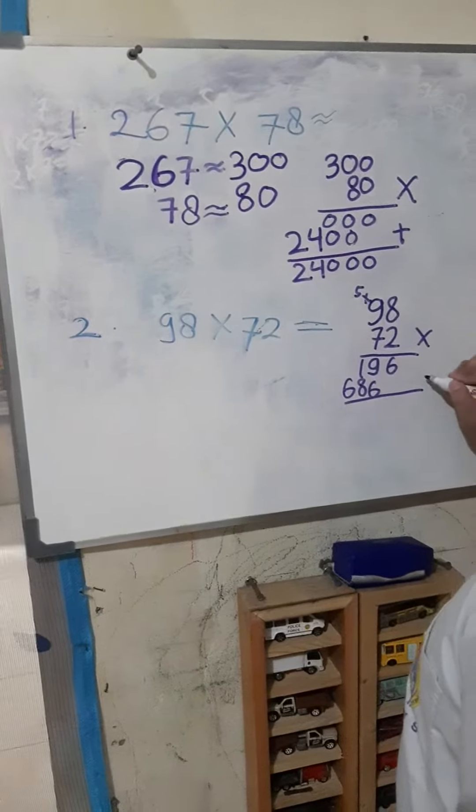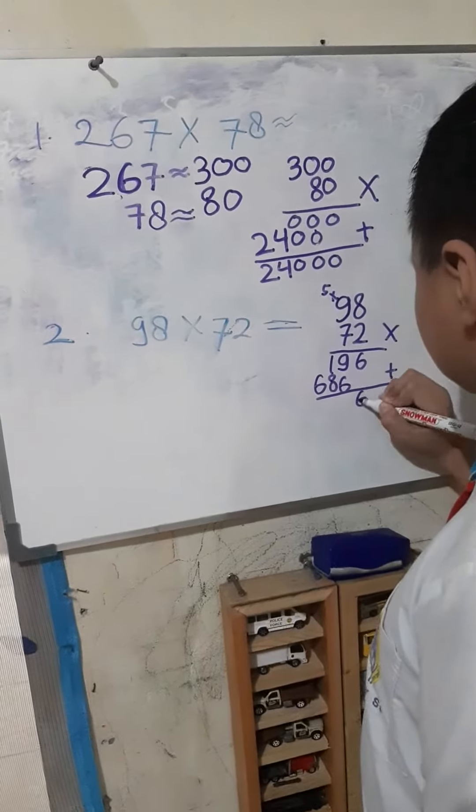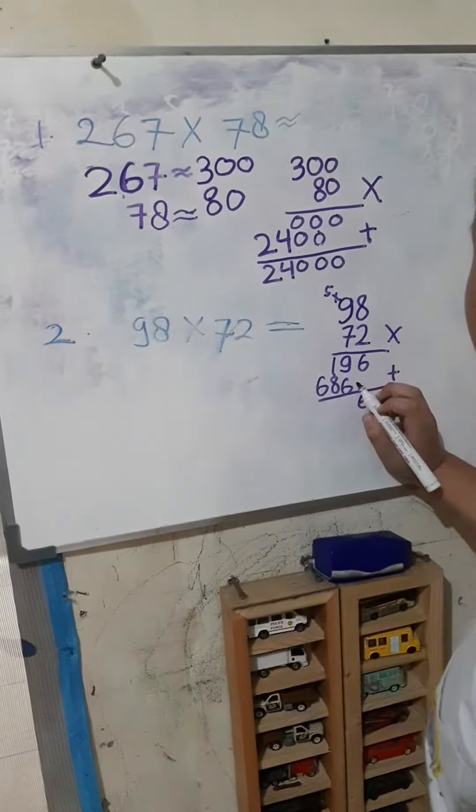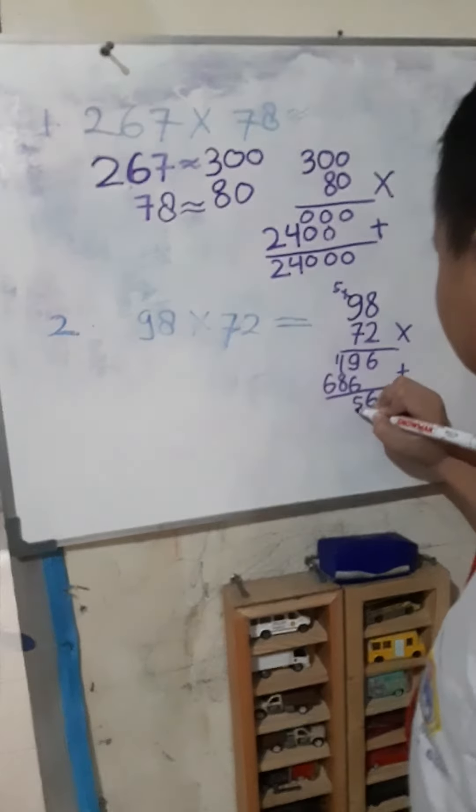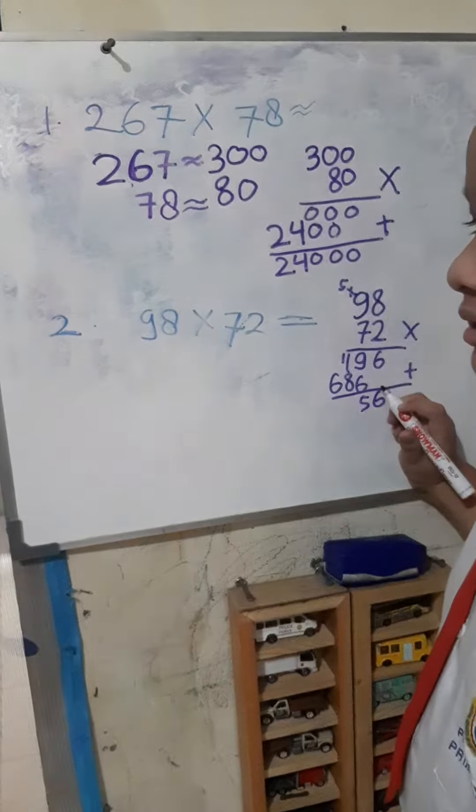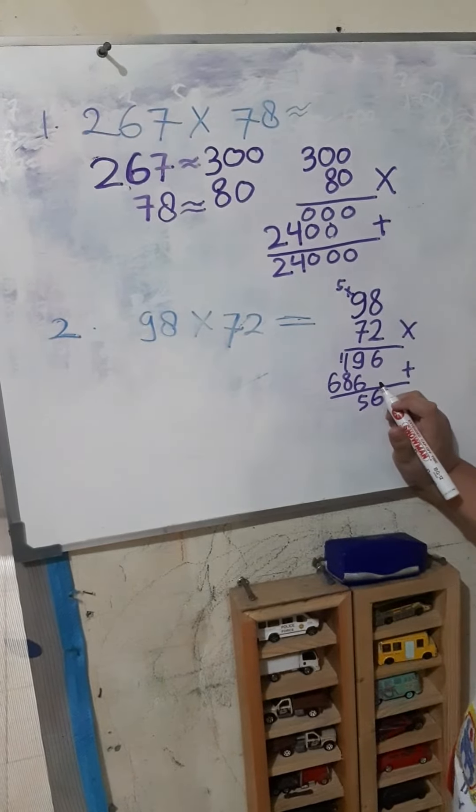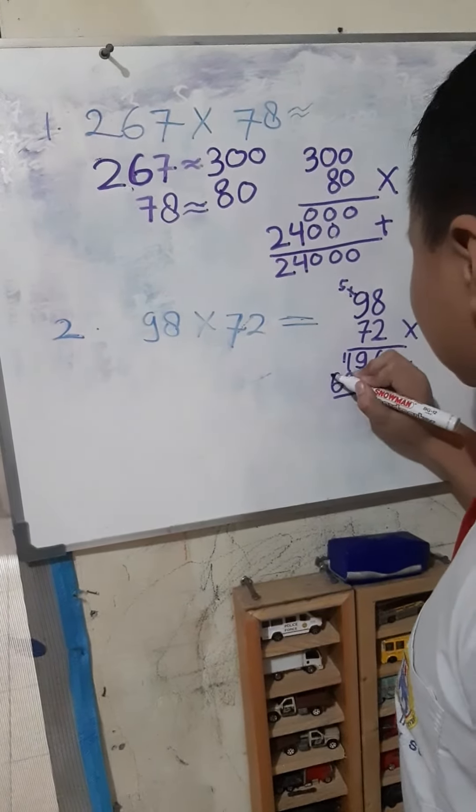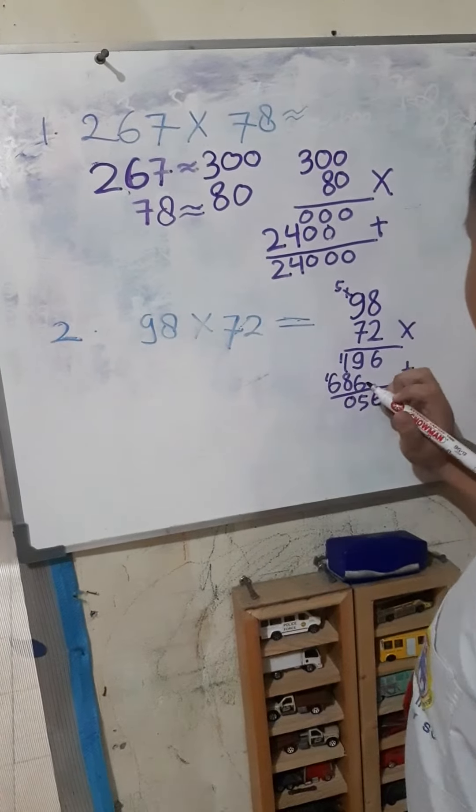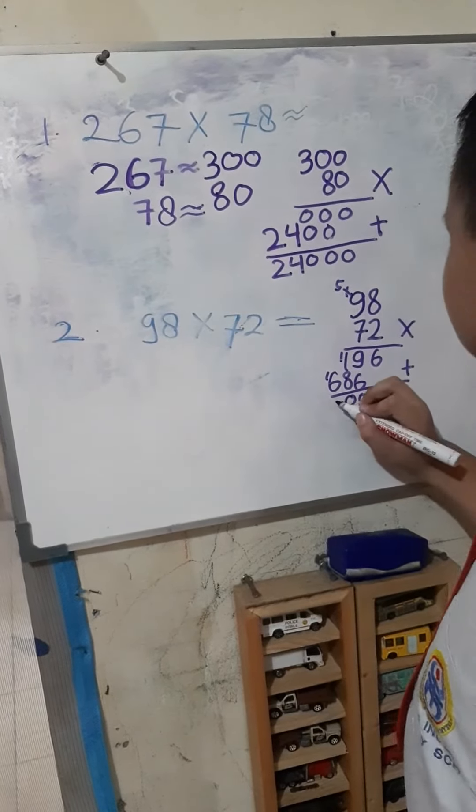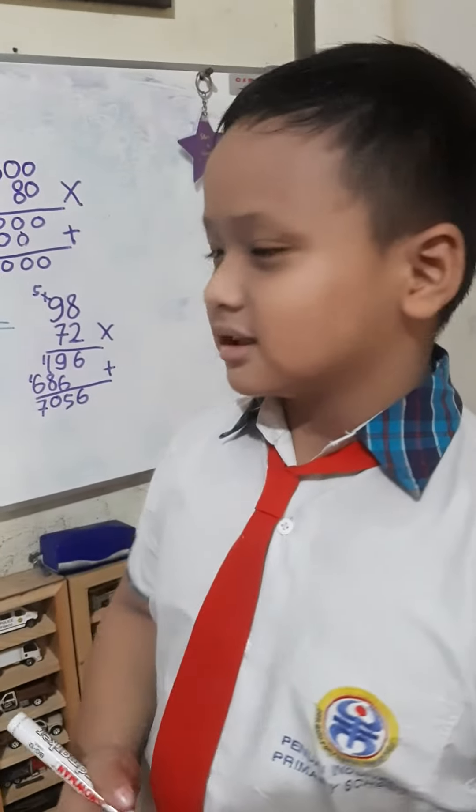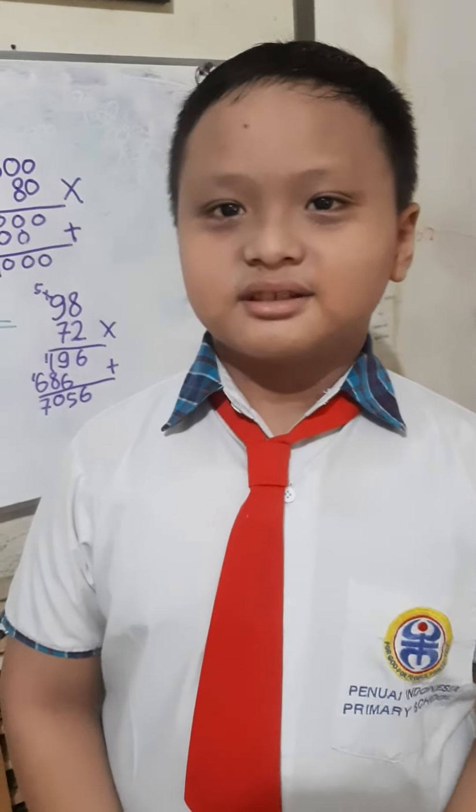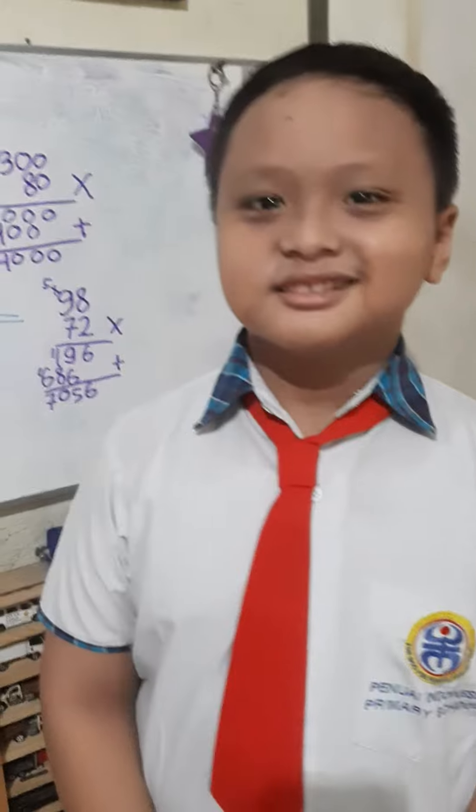Then we plus. 9 plus 6 equals 15. 8 plus 1 equals 9 plus 1 again is 10. 1 plus 6 equals 7. The answer is 7,056. Thank you. Bye.